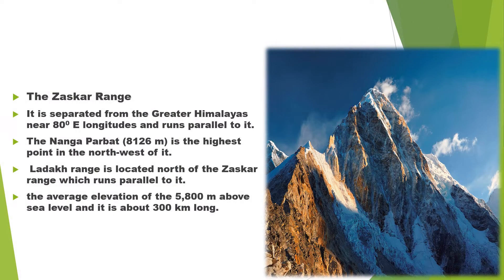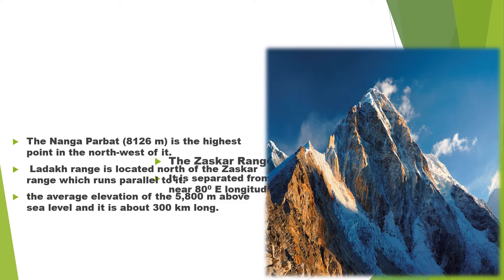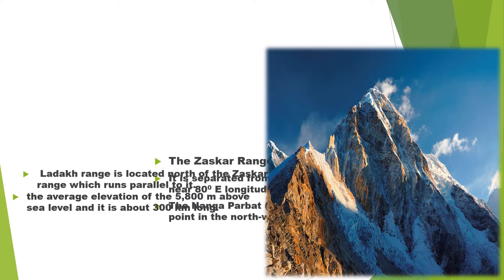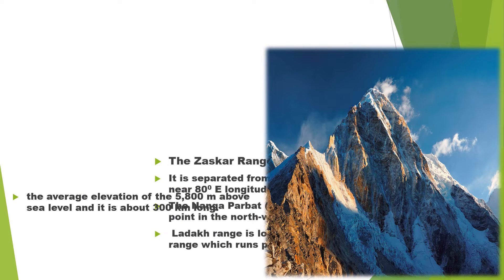The third range is the Zaskar range. It is separated from the Greater Himalayas near 80 degrees east longitude and runs parallel to it. Nangaparbat, with 8,126 meters, is the highest point in the northwest of the Zaskar range. The Ladakh region is located north of the Zaskar range, which runs parallel to it. The average elevation is about 5,800 meters above sea level, and it is about 300 km long.